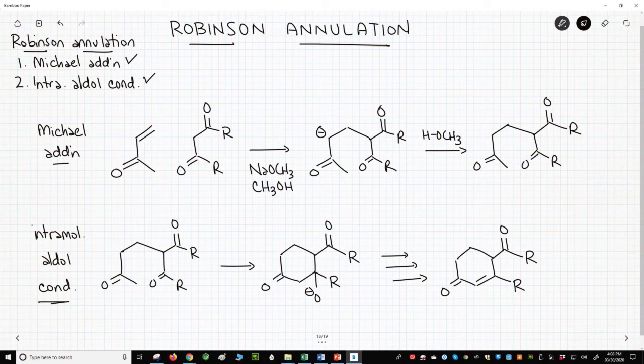Let's walk through this sequence of reactions. In general, the Robinson starts with an alpha-beta unsaturated ketone and some kind of 1,3-dione as the Michael donor.